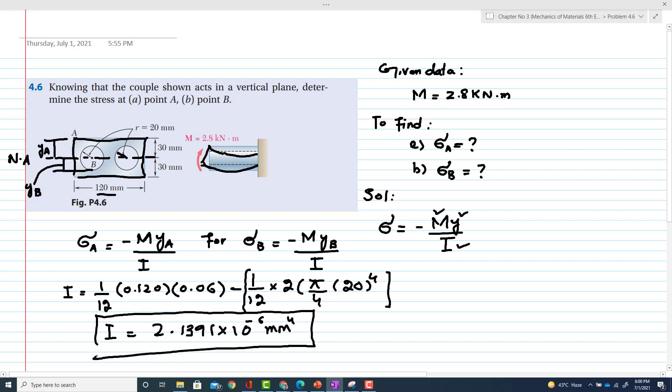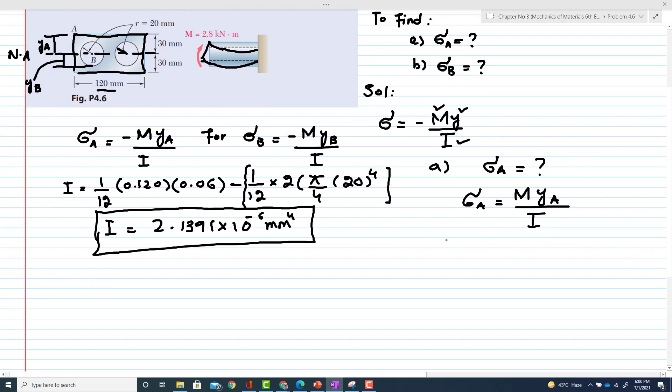Now we have calculated the value of I, so we will use the formula. Part A: σA = MyA/I. The moment is 2.8 kilonewton·meter, so σA = 2.8 × 10³ N·m.